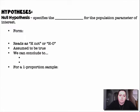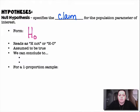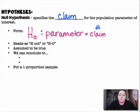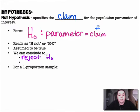Our null hypothesis specifies the claim for the population parameter of interest. Usually that will be given to you. The form is H₀, the null hypothesis, where your parameter is equal to whatever your population value is. It is assumed to be true, and we can conclude to either reject the null hypothesis or fail to reject the null hypothesis.